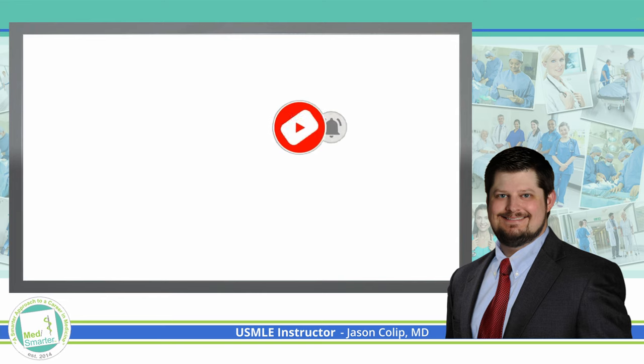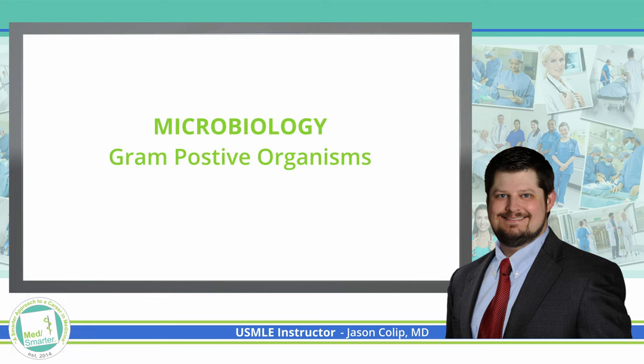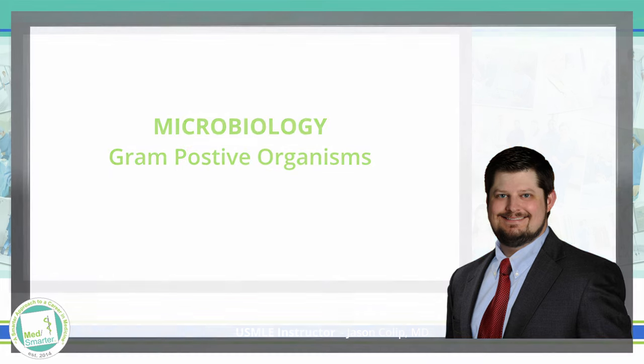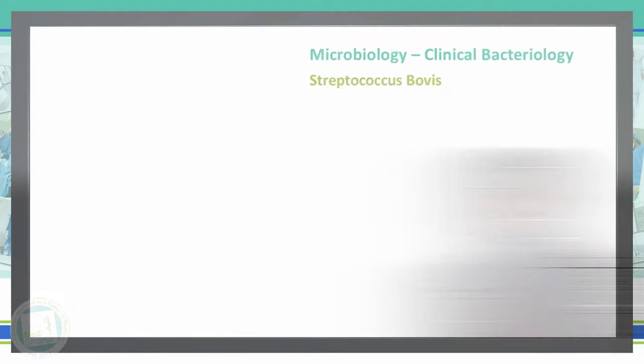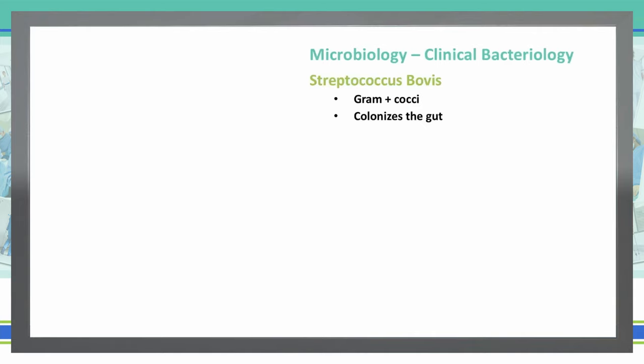Today we're going to continue on our subject of gram-positive bacteria. Specifically, we're going to start with Streptococcus bovis. Streptococcus bovis is a gram-positive cocci, and most importantly, it colonizes the gut. This is a common occurrence for it.